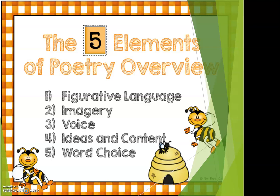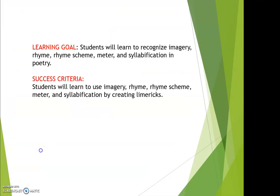Number one, we have figurative language. Two, imagery. Three, voice. Four, ideas and content. And five, word choice. So in every type of poem that we write, we need to make sure that we are using all five of those elements.